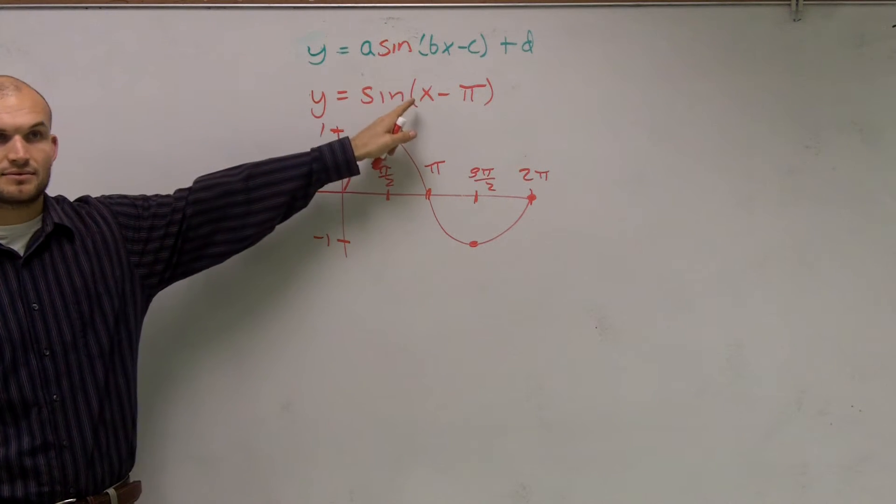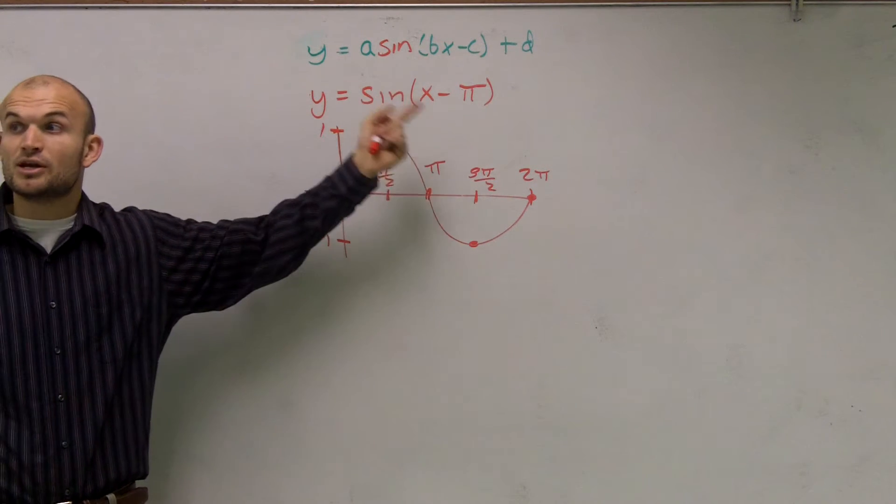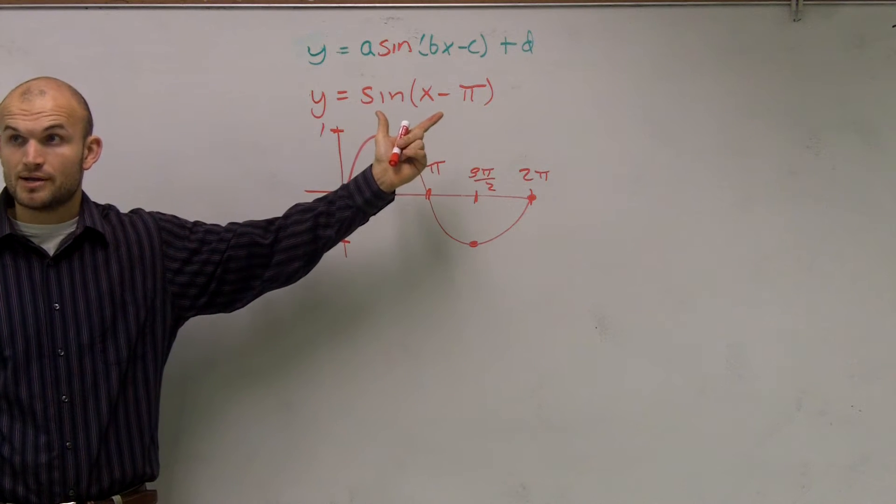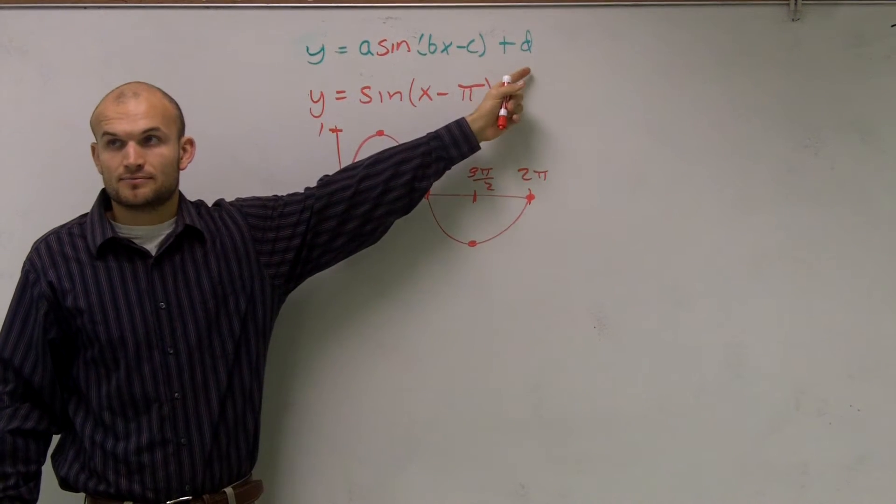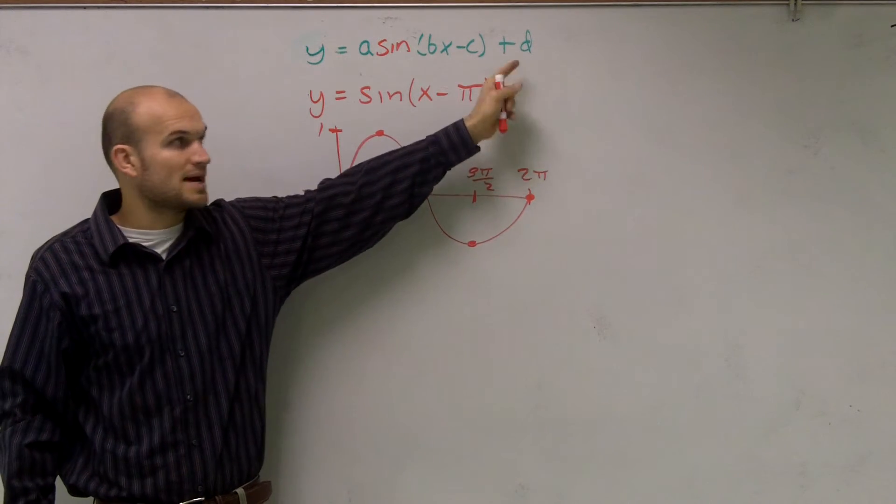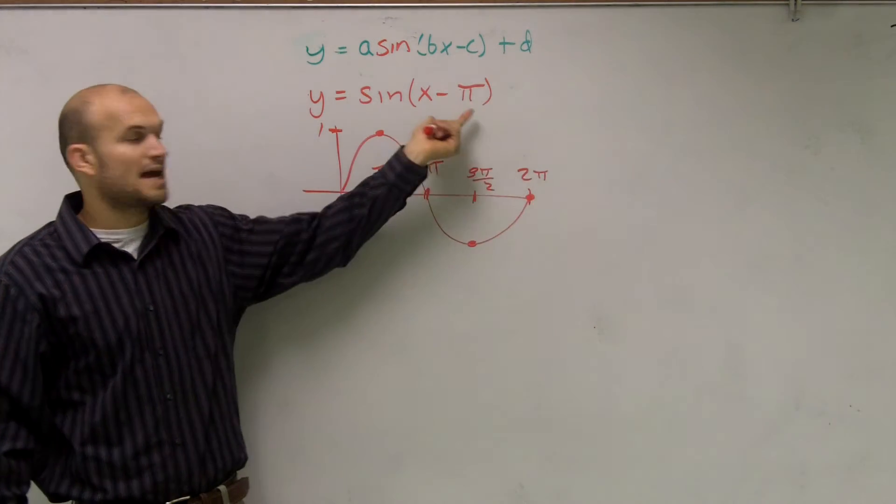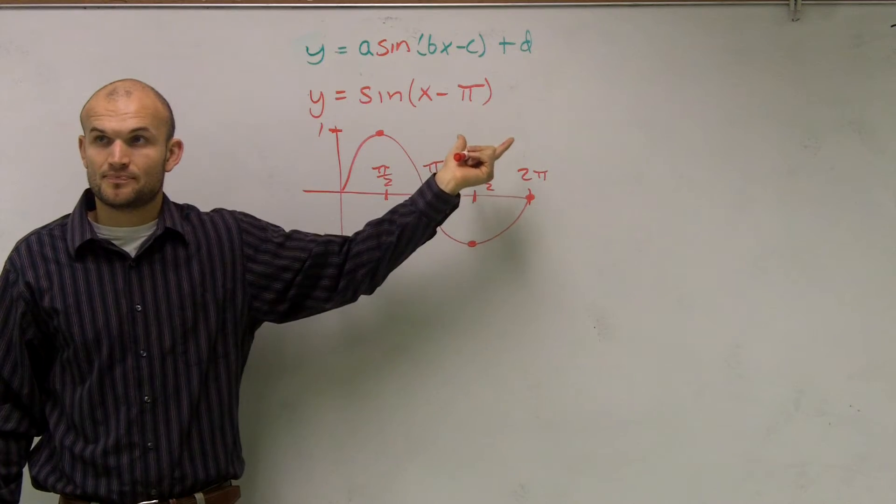Did I put a number in front of x? For my b. So therefore, my period is still going to be 2π, right? However, is there a number outside that's going to shift it up or down? No. So I'm not going to be shifting my graph up or down. The only thing that's going to happen is I'm going to shift left or right, okay?